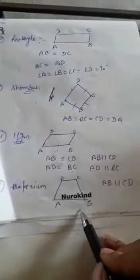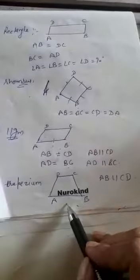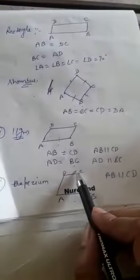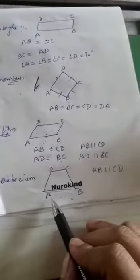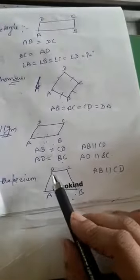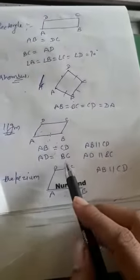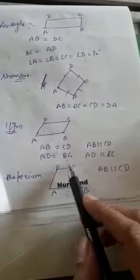Next is a trapezium. A trapezium is a quadrilateral in which one pair of opposite sides is parallel. In trapezium ABCD, AB is parallel to CD but AD is not parallel to BC — only one pair is parallel.